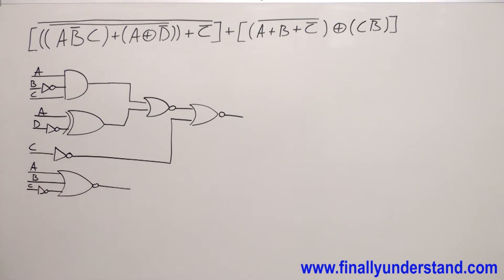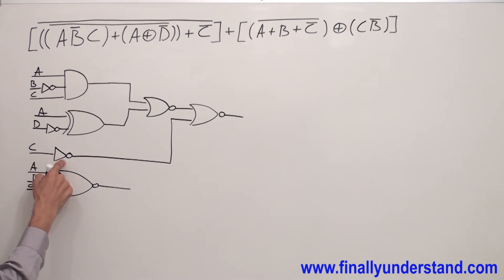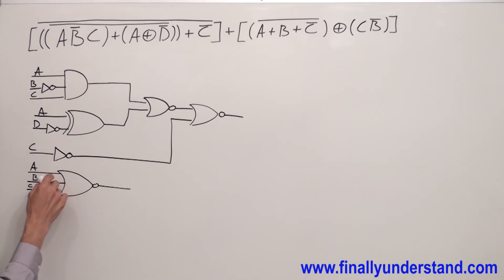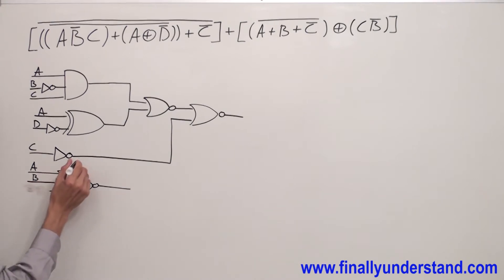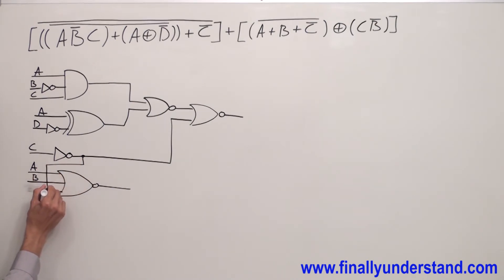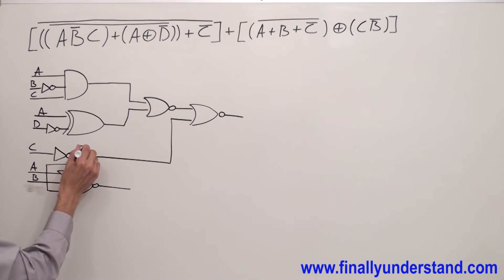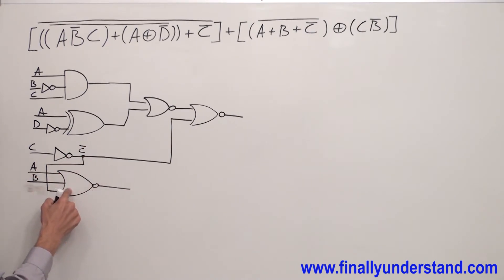Now take a look at what we have here. We have C̄ also over here. I'm not supposed to use two inverters. So what I can do is erase one of them. Because this one was first, I can erase this one. And simply connect the output of this inverter to the input of my NOR gate. This is going to give me also C̄, and this C̄ will go to the NOR gate.